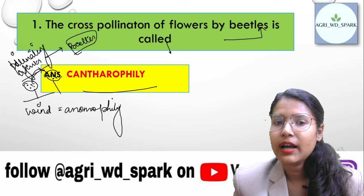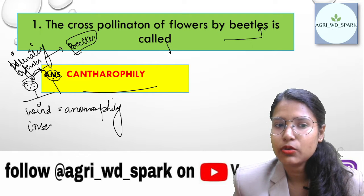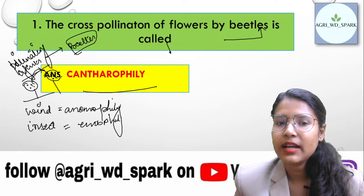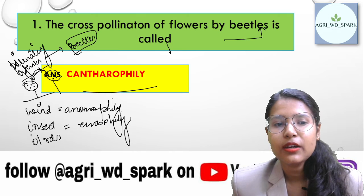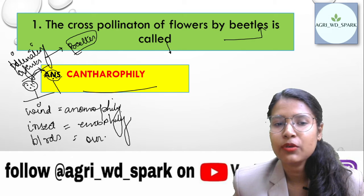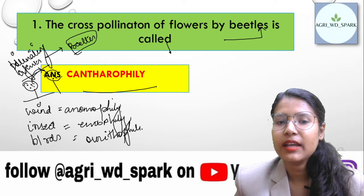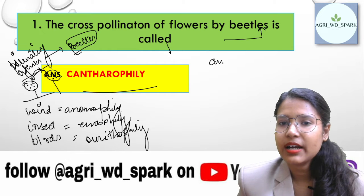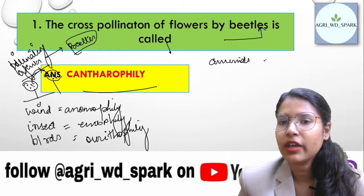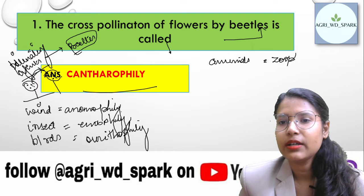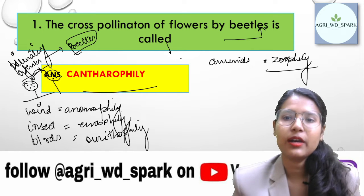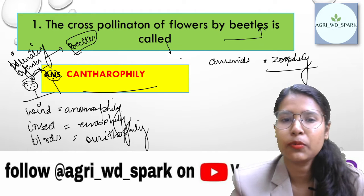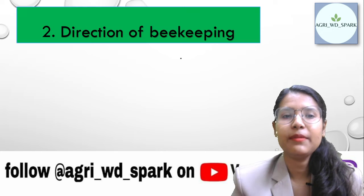When pollination is done through insects, we call it entomophily. If birds are going through the pollens, then we call it ornithophily. If animals are going through the pollens, then we call it zoophily. So these are different types of pollination — birds, insects, and animals each have their own name.